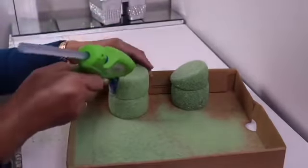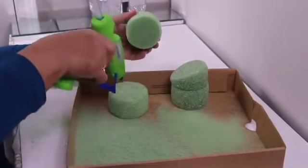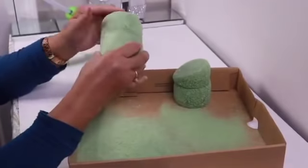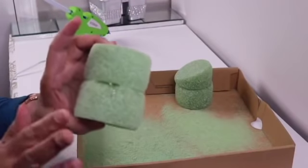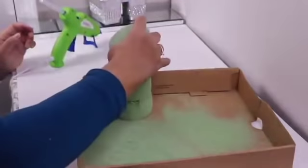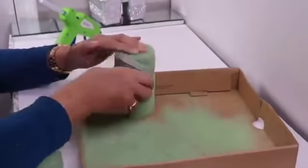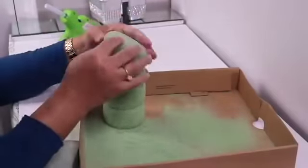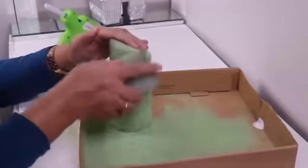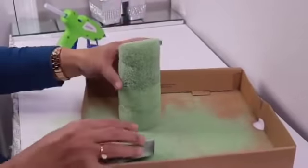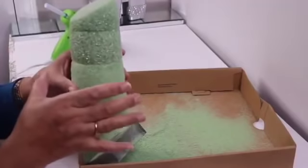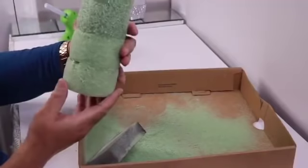You take a hot glue gun and start gluing your pieces together. You know, if you can't use a low temp, it's melting right there, but don't worry about it, it'll be fine. What I'm doing is you don't want the top to be wider than the bottom.